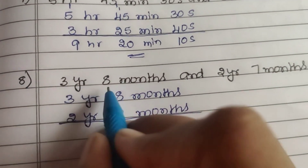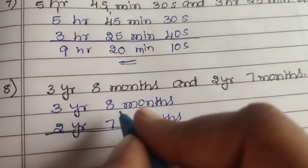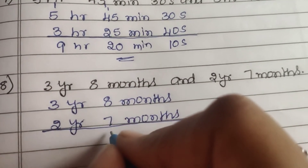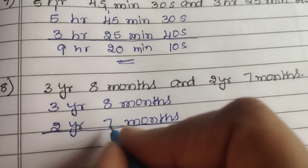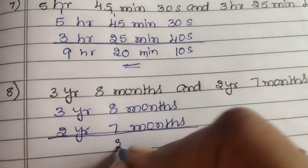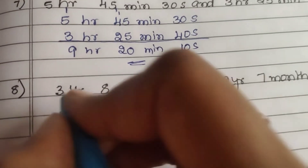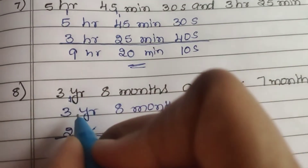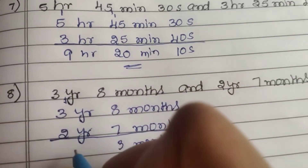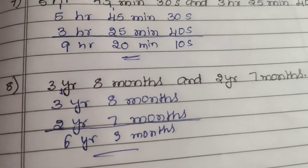Next: 3 years 8 months and 2 years 7 months. 8 plus 7 is 15 months. 15 minus 12 is 3 months, carry 1. 1 plus 3 is 4, 4 plus 2 is 6. The answer is 6 years 3 months.